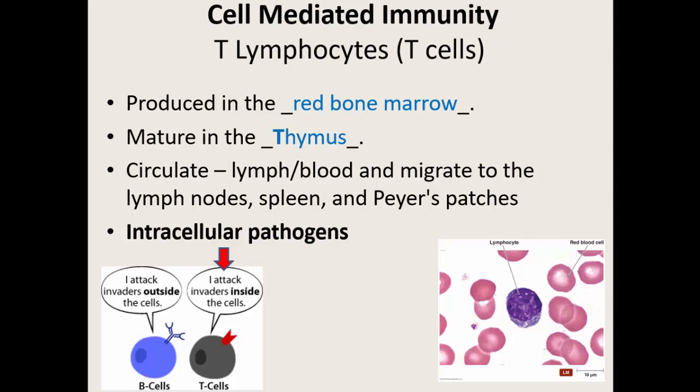Today we're going to talk about the other branch of the adaptive immune system: the cell-mediated branch. The cell-mediated branch has its own type of lymphocyte — the T lymphocytes or T cells. They get the 'T' from where these cells mature. Although lymphocytes are produced in the red bone marrow, they don't mature there; they mature in the thymus. These cells like to float around in the blood and lymph, mostly in the lymphatic system, and hang out in higher concentrations in lymph nodes, the spleen, and the Peyer's patches — that mucosa-associated lymphatic tissue in our digestive tract.